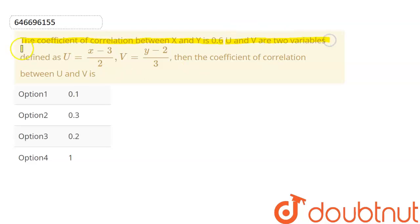u and v are two variables defined as u equals x minus 3 divided by 2, v equals y minus 2 divided by 3. Then the coefficient of correlation between u and v is.